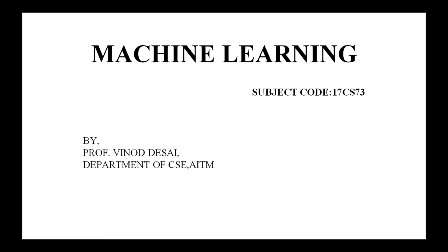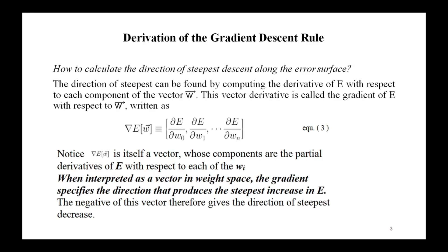Hello everyone. Last class I discussed gradient descent, the delta rule, and visualizing the hypothesis space — very important concepts with respect to the perceptron. In today's class I am going to discuss the derivation of gradient descent, which is also very important for your examination. He may ask you to give the derivation of the gradient descent rule and how we can calculate the direction of steepest descent along the error surface.